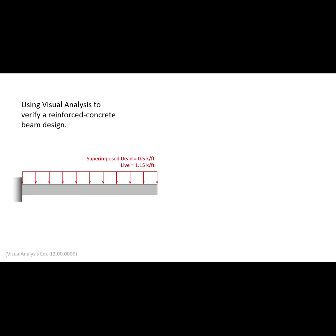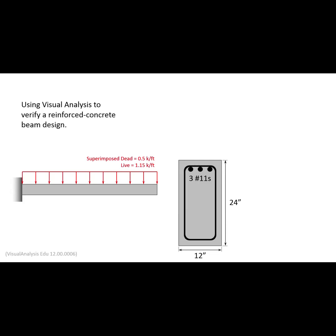In this short video, I want to show you how to use Visual Analysis to check a reinforced concrete beam design. This is the problem we had in class — it was a cantilever beam with a distributed load on it. When we got the design done, we had a 12-inch wide beam by 24 inches deep, and we've got three number 11 reinforcing bars as the tension reinforcement up at the top.